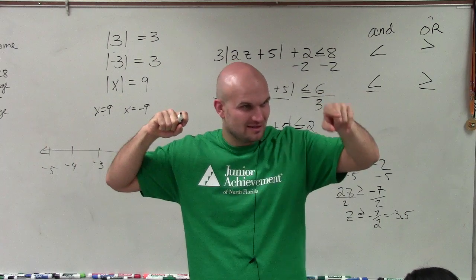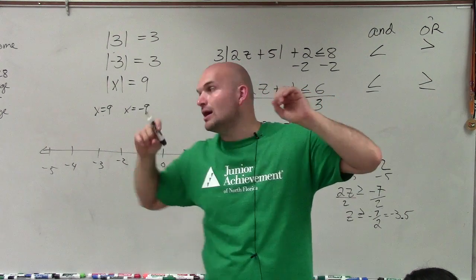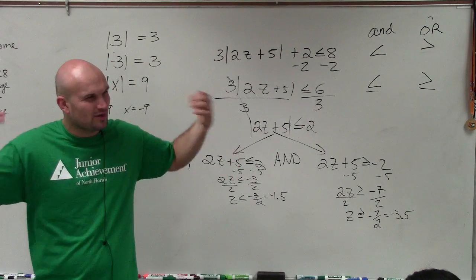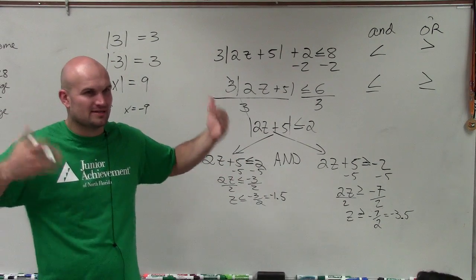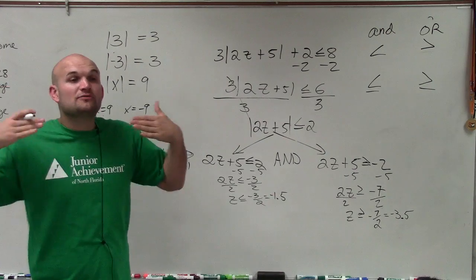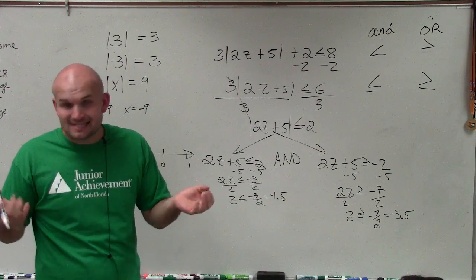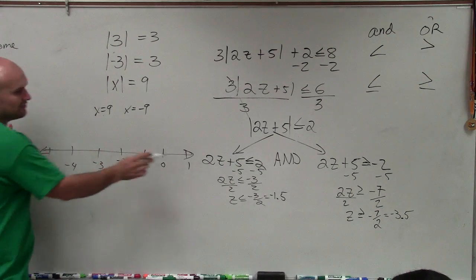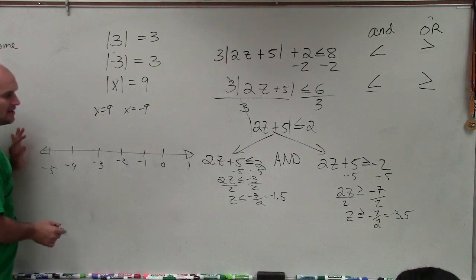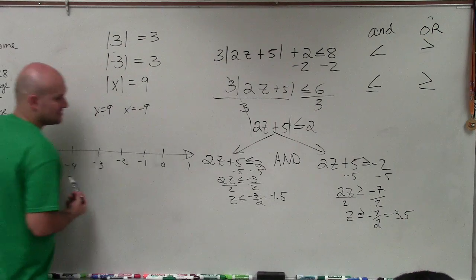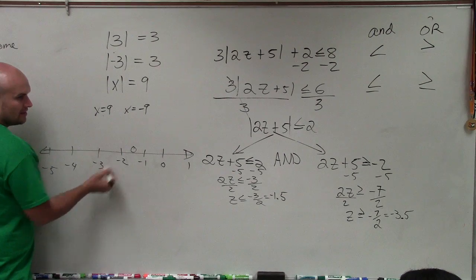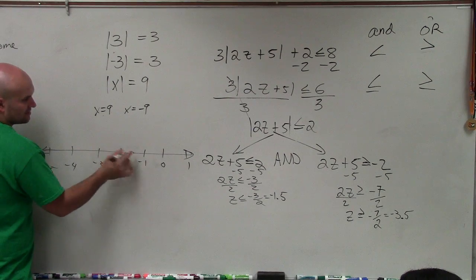Well, what are we looking for when we're graphing an AND compound inequality? We're looking for the intersection, right? AND is where they intersect. So what we have to do is we have to graph each of these separately, all right? So to graph z is less than negative 1.5, I estimate where negative 1.5 is, which is like right here, right? So I'll put a nice little dot.